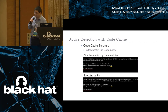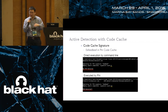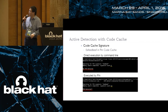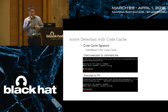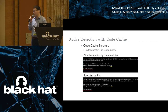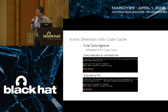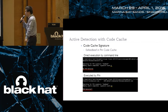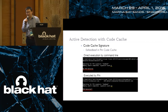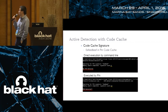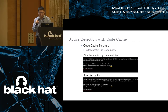Another detection approach is the code cache signature. If you look at the PIN implementation, they put a special signature at the beginning of the code cache — for example, 0xFEEDBEEF. You can search for this signature in memory. In native mode you find nothing, but if PIN is instrumenting the target code, you can search out a bunch of these signatures. Because this signature is tied to the implementation details, you can easily figure out whether you're running under PIN or DynamoRIO.